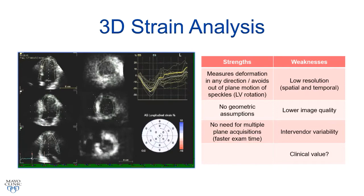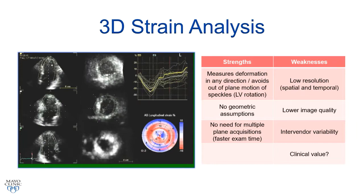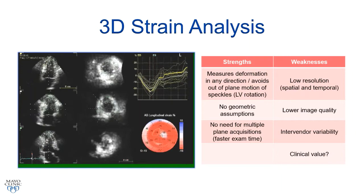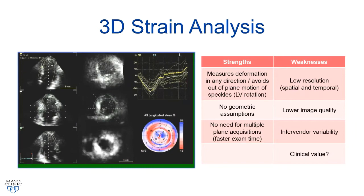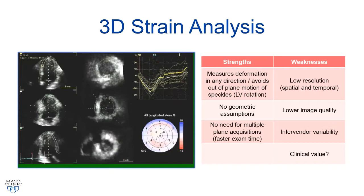What about 3D strain analysis? It would be fantastic because it could measure deformation in any direction, avoid out-of-plane speckle motion, evaluate parameters of rotation, and eliminate geometric assumptions and multiple plane acquisitions for faster exam times. However, there is much lower spatial and temporal resolution, worse image quality, larger intervendor variability, and 3D strain may not quite be ready for prime time.